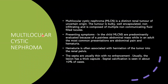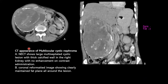Multilocular cystic nephroma is a distinct renal tumor of uncertain origin — a bulky, well-encapsulated, non-infiltrating tumor with multiple non-communicating fluid-filled locules. In children it presents as a painless abdominal mass; in adults it presents with abdominal pain and hematuria, often associated with herniation of tumor into the renal pelvis. Septae are usually thin with no enhancement. Septal calcification is seen in about 10% of cases. NECT shows a large multiseptated cystic lesion with a thick calcified wall in the right kidney with no enhancement on contrast study. Coronal reformatted images show a well-maintained fat plane around the lesion.